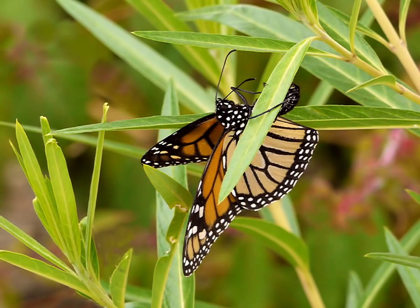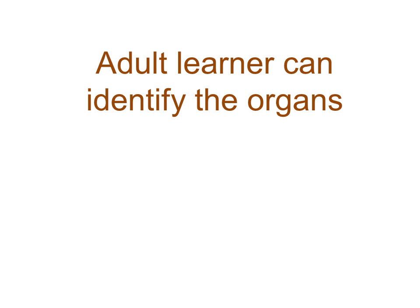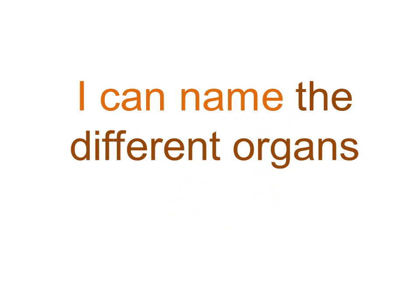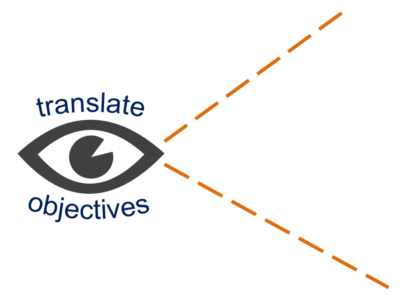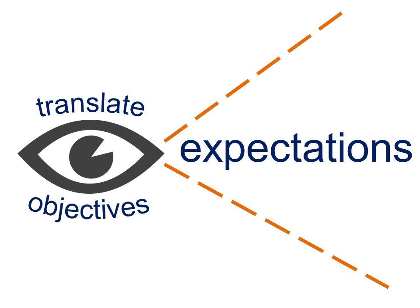We will have to learn just as the students do. Translate the objectives into student-friendly language, because the objective might say, 'The adult learner should be able to identify or describe these organs.' Instead, make it: 'I can identify the endocrine organs' or 'I can name the organ.' Translate it — that makes it easier for the student to understand where you're going and what is expected of them.